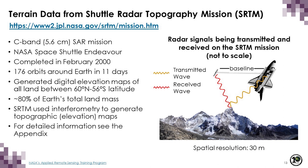SRTM stands for Shuttle Radar Topography Mission. It used a synthetic aperture C-band radar that flew on Space Shuttle Endeavour, completing 176 orbits around the Earth in 11 days in the year 2000. It generated digital elevation maps of all land between 60 degrees north and 56 degrees south latitude, covering about 80 percent of Earth's total landmass. SRTM uses interferometry — emitting pulses and receiving reflected waves at two different times — to generate topographic elevation maps.